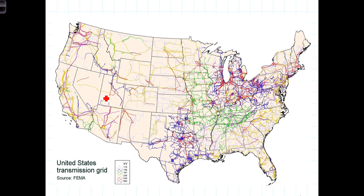Out here in the West where I live, populations are more dispersed, and we don't have nearly the infrastructure in power lines. Yet it's interesting to note that out here in the West we have large resources of renewable energy — both wind, solar, and geothermal. One of the challenges in getting more renewable energy into the nation's energy portfolio is transmission. We just don't have the transmission infrastructure to get the power from the places where the renewable energy exists out here in the West back to the larger population centers where the higher energy consumption is in the East.